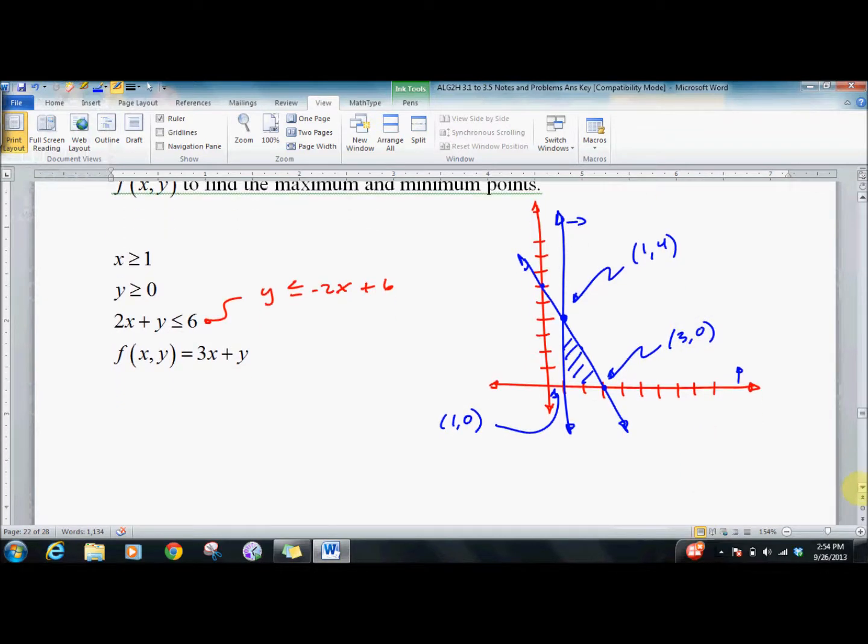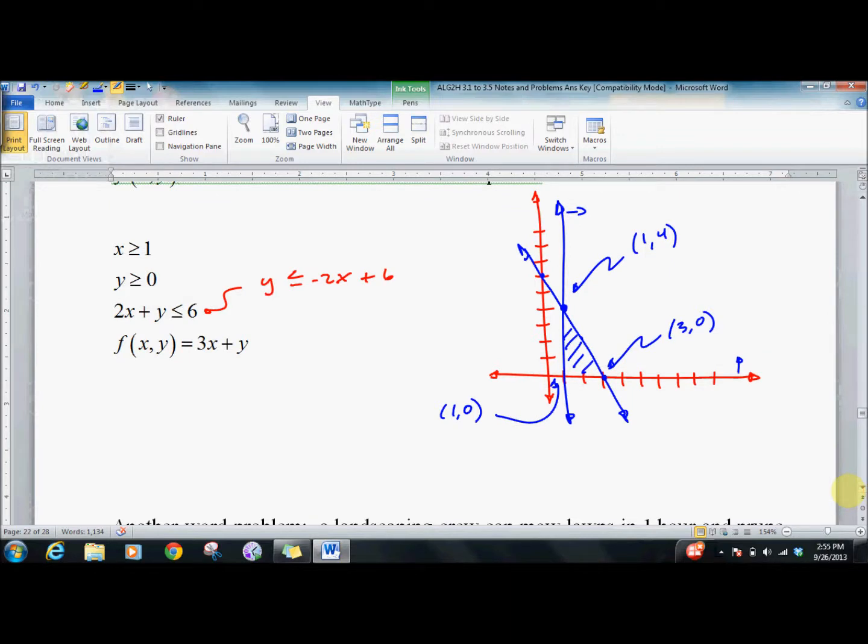Let's see which one maximizes and which one minimizes. We might have a system where we say, let's minimize the cost, in which case we're looking for that point. You never know. So here's our points, let's try them all. f of (1,0) is 3. f of (1,4) is 7. f of (3,0) is 9. So this is the minimum point. No other point we try anywhere inside of this whole shaded area is going to give us a smaller value than that. And no other point is going to give us a bigger value than this. That's the algebra.